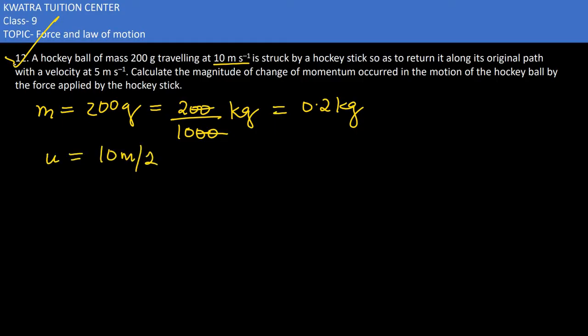It's struck by a hockey stick so as to return it along the original path with a velocity of 5 meters per second. So what is v? 5 meters per second, and that too negative.